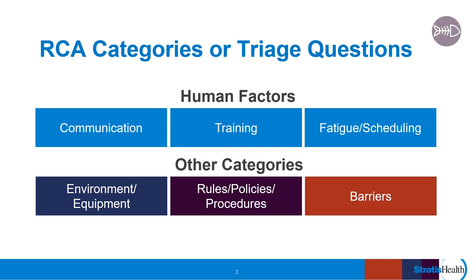Sometimes there isn't a policy or procedure in place to help guide performance, or the policy or procedure is outdated and no longer appropriate, or even that there are too many policies and procedures and the ones that exist are too long, too detailed, and therefore lose value. Barriers can be a confusing category. Barriers can be unwritten rules that have developed that dictate performance, or the condition of a patient that prevented best practice from occurring. For example, you're unable to turn a patient because they were unstable and they end up with a pressure ulcer. Another example would be a barrier that was in place but failed and therefore the event occurred, as demonstrated by the Swiss cheese model.